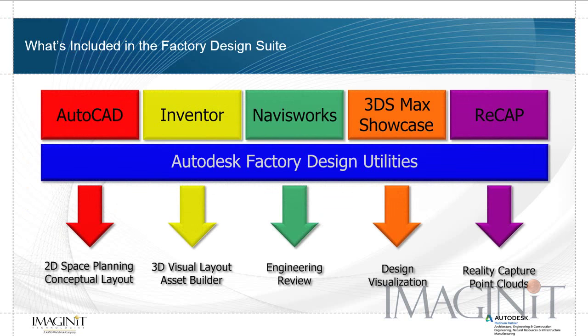Before we get started with the main presentation, I want to make sure you know what's included in the Factory Design Suite. Let's start off with our 2D work inside of AutoCAD. The main version of AutoCAD that comes with the Factory Design Suite is AutoCAD Architecture, which allows us to easily create any architectural element needed for our layout design. They also give you AutoCAD Mechanical, so if you need to do 2D mechanical designs, you have the perfect AutoCAD for that solution.